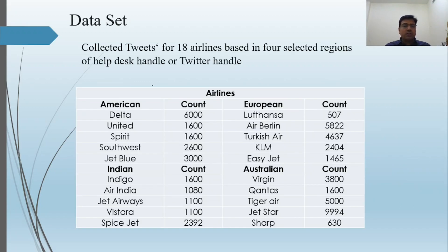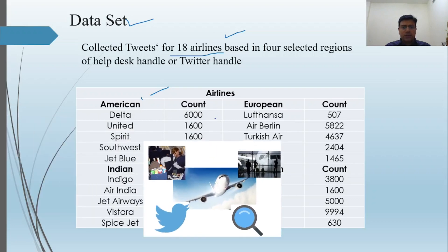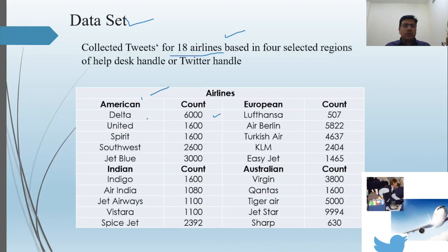The initial step is to collect data. Eighteen different airlines have been selected across four different regions: America, Europe, India, and Australia. Several tweets have been collected — for example, Delta (America) had 6,000 tweets collected, and Air Berlin had 5,822 tweets. This is mainly for academic purposes, to determine whether loyalty measurement is possible with the help of Twitter data.